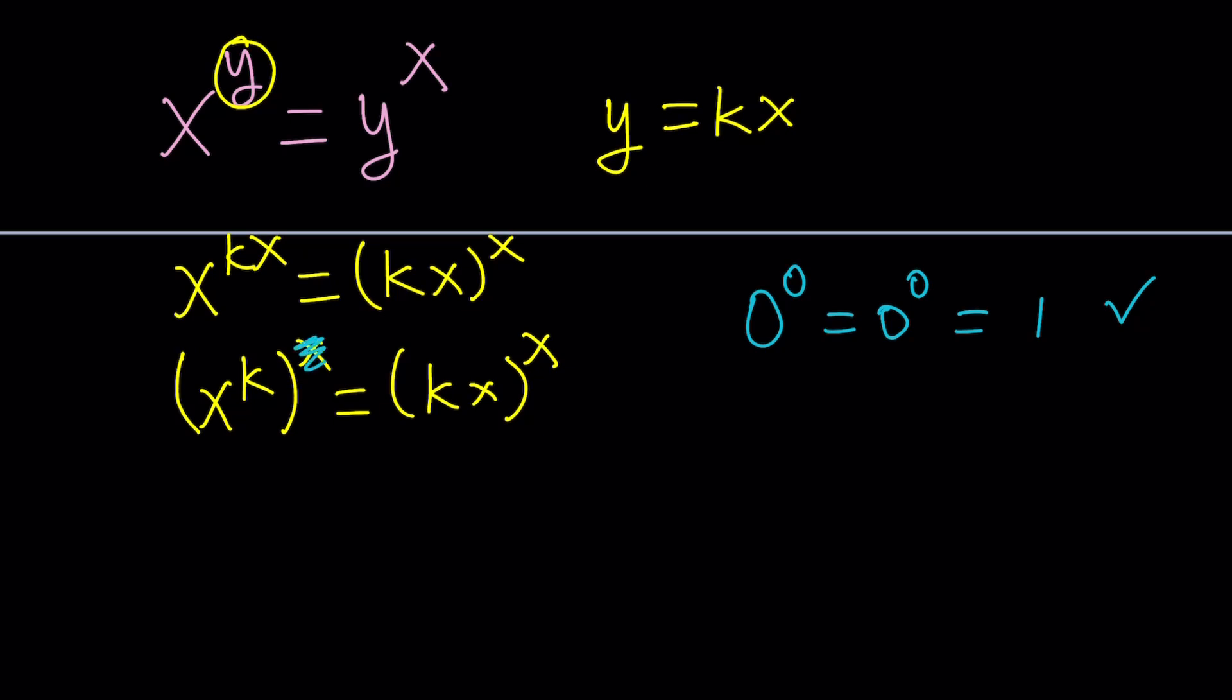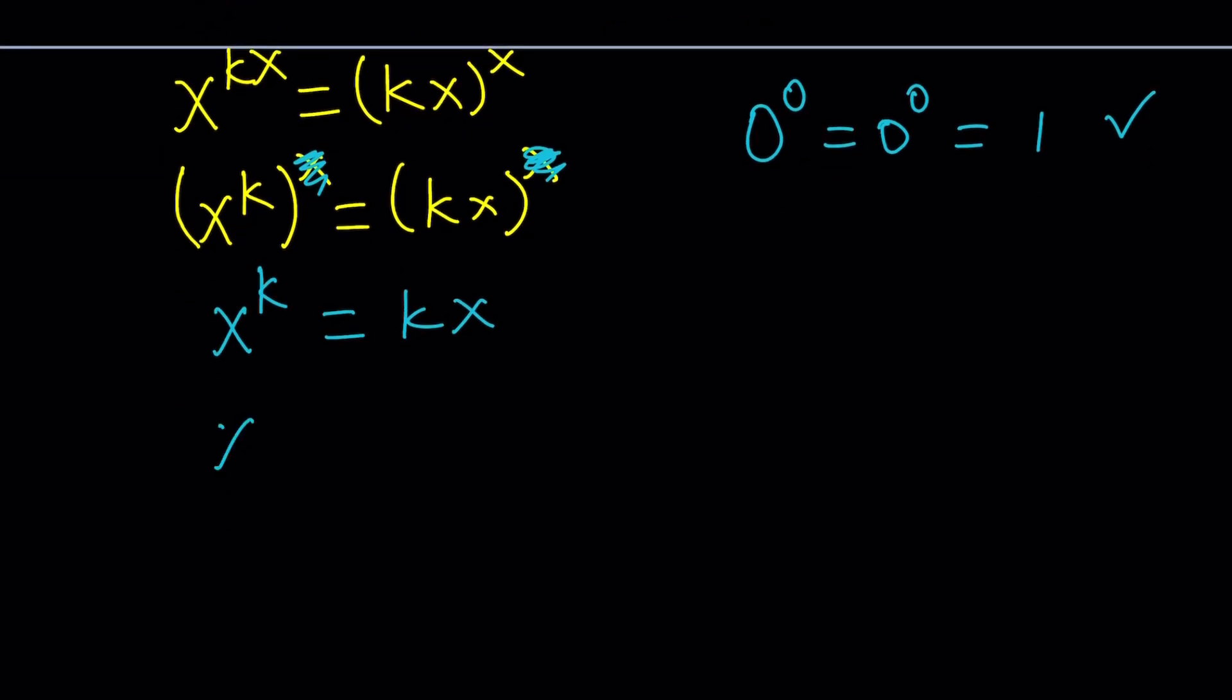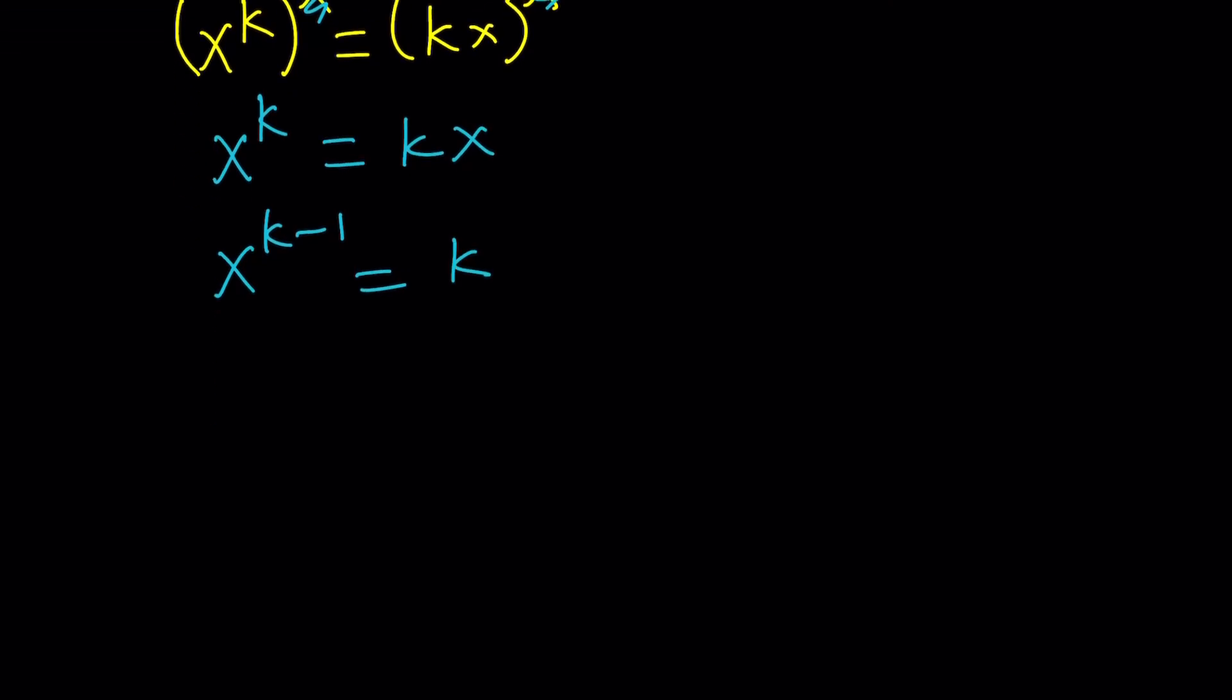So let's go ahead and get back to this. From here, we can basically erase the x's and then end up with something like x to the k equals kx. And then divide both sides by x. x to the power k minus 1 equals k. And then finally, raise both sides to the power 1 over k minus 1. x becomes k to the power 1 over k minus 1.